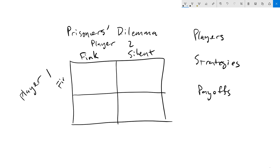Both players have the option to fink or stay silent. If one player finks and the other stays silent, the player who finks is allowed to go free, whereas the silent player will get a long prison sentence. For example, if player one finks and player two stays silent, player one gets to go free and gets three utility, whereas the silent player who was finked on gets the longest possible prison sentence — a utility of zero. The lower left corner utility will be for player one, and the upper right corner utility will be for player two.